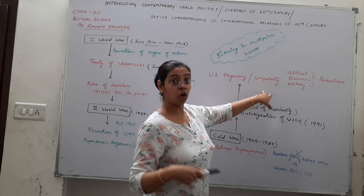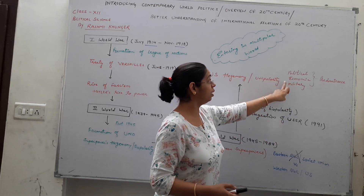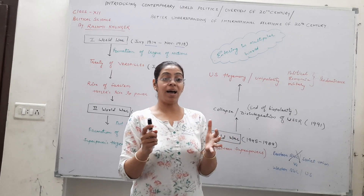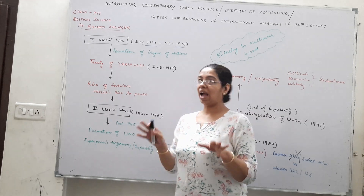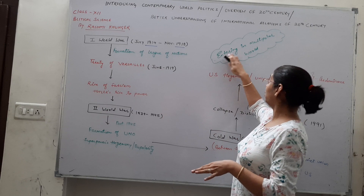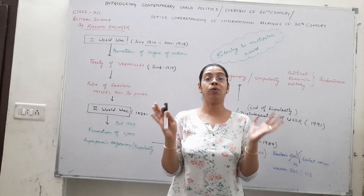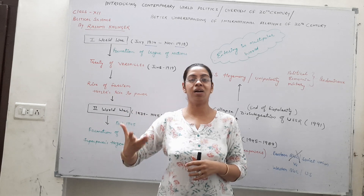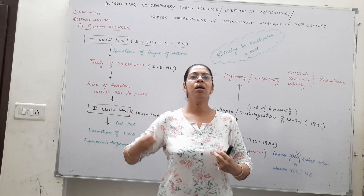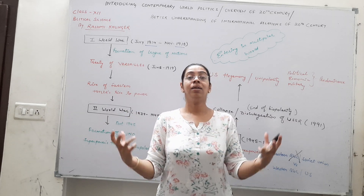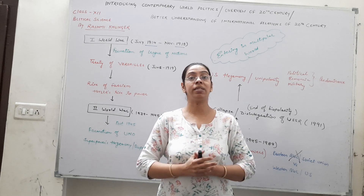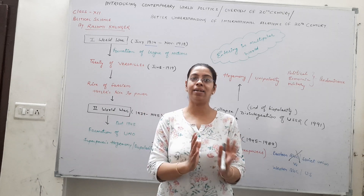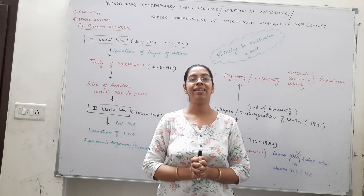Why do we call the US the supreme power? Because politically, economically, and militarily, it was dominating the whole world. But I think this is now coming to an end, and we are going to enter a multipolar world. The US is not as powerful now — there are many power blocks in different areas and directions, and India is one of them. So we are entering a multipolar world, and I hope this overview will help you understand the next chapters of Contemporary World Politics. Thank you so much.